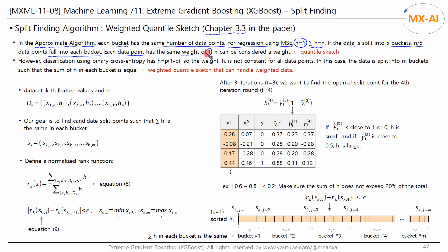So we can think of h as the weights for the data points. This is the quantile sketch algorithm. A sketch algorithm, in short, is about calculating something in parallel on small sets of data, and then combining the results to get an approximate final output for a large data set.